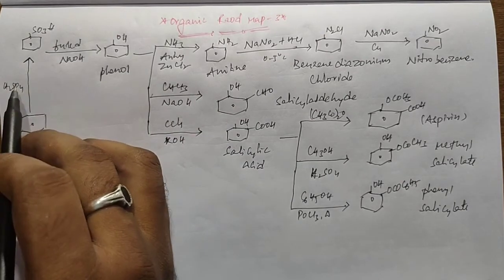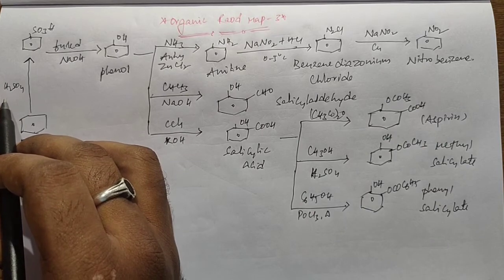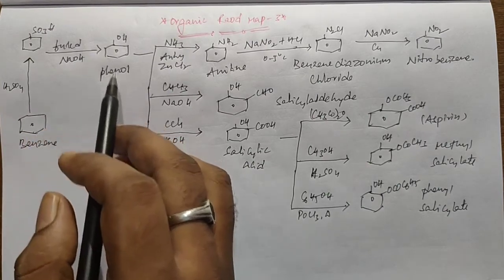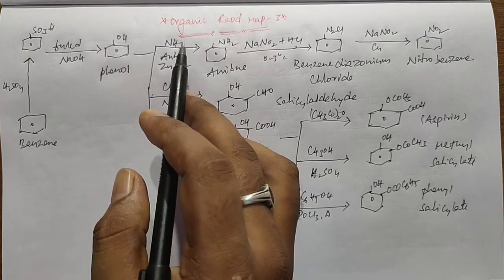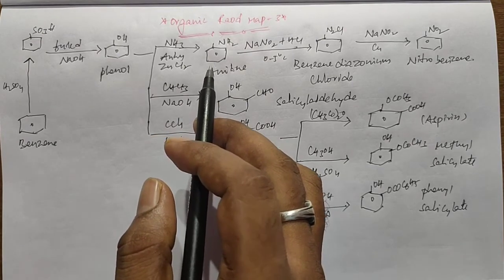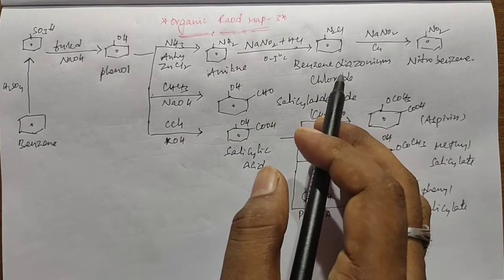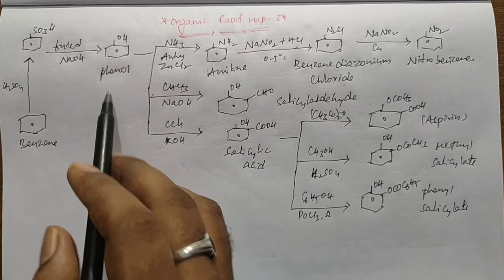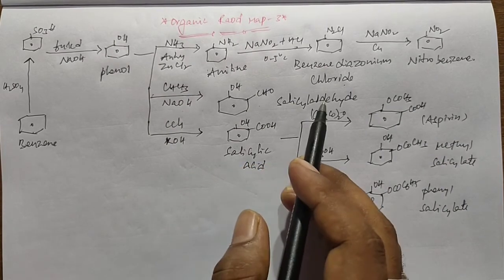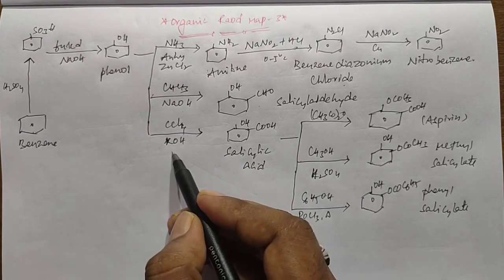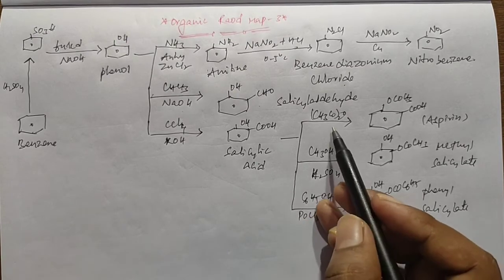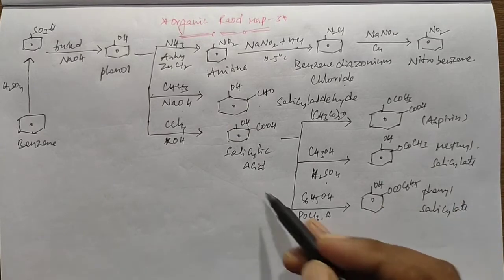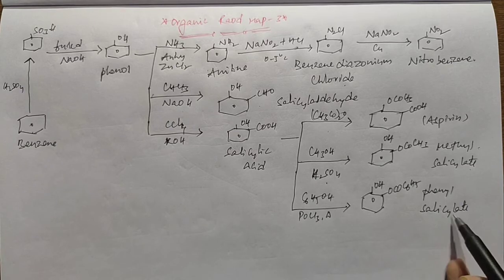To recap: Benzene undergoes sulphonation with Sulphuric Acid below 80 degrees to form Benzene Sulphonic Acid, which fused with NaOH gives Phenol. Phenol with Ammonia and Anhydrous ZnCl2 gives Aniline; Aniline undergoes diazotization to form Benzene Diazonium Chloride, which with Sodium Nitrite and Copper gives Nitrobenzene. Phenol with Chloroform/NaOH gives Salicylaldehyde; Phenol with CCl4 in strong alkali gives Salicylic Acid, which gives Aspirin with Acetic Anhydride, Methyl Salicylate with Methanol, and Phenyl Salicylate with Phenol and POCl3.